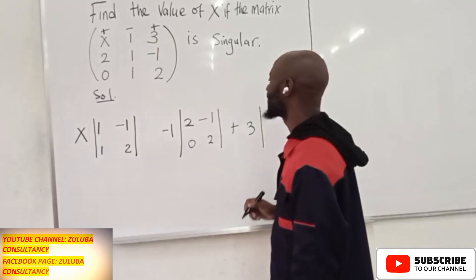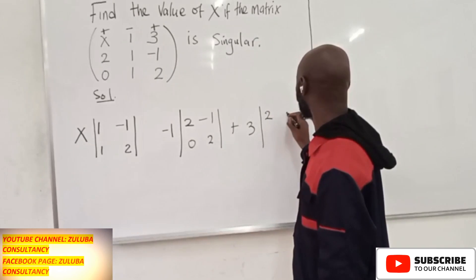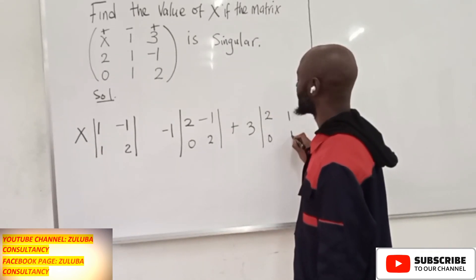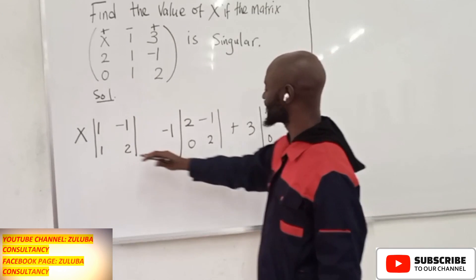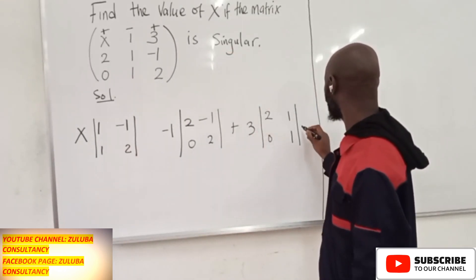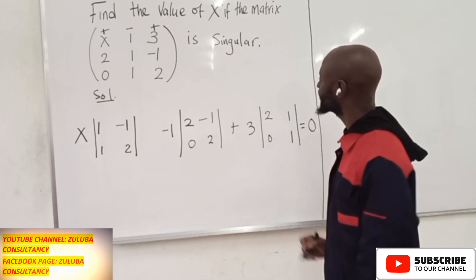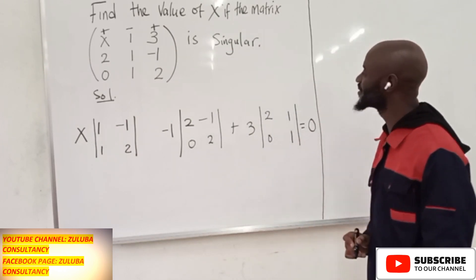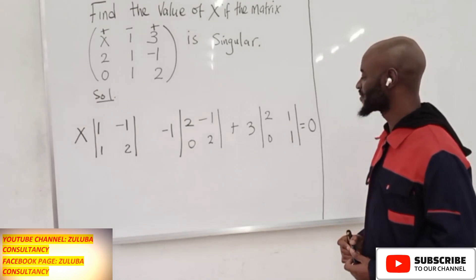Minus 1, then 1, minus 1. Then you calculate these determinants. But remember, this matrix is singular, so this will give us 0. For a singular matrix, its determinant is equal to 0.